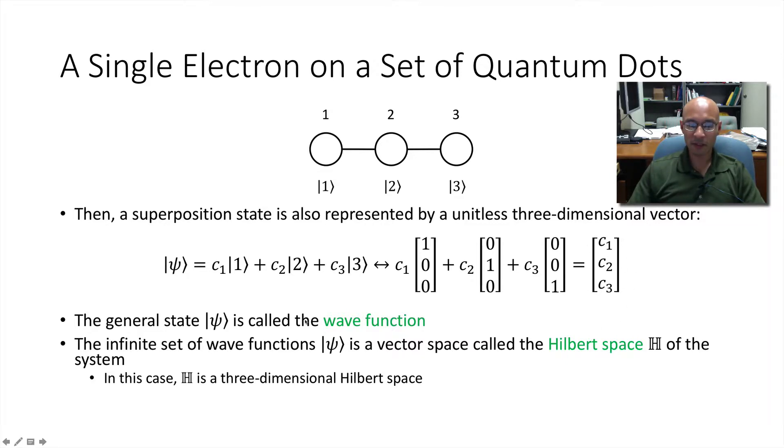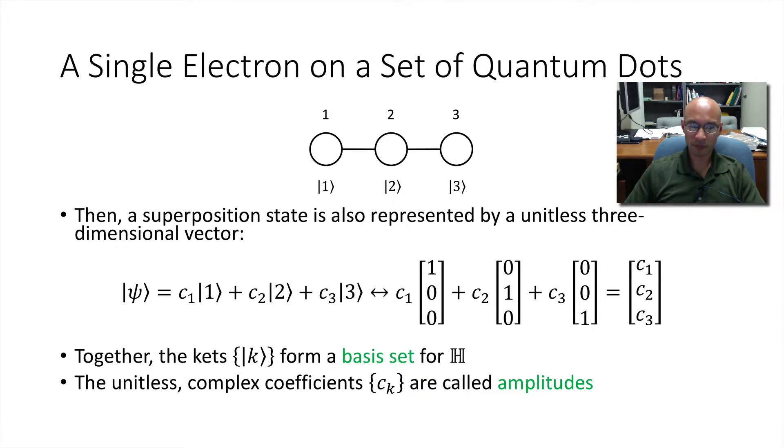So in general, this arbitrary state psi is called a wave function. And the infinite set of wave functions or options for psi is called a vector space. And more specifically in quantum mechanics, we refer to that as a Hilbert space. And we give it this bolded sort of H. In this case, the Hilbert space is a three dimensional space.